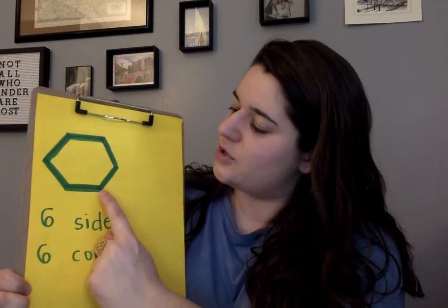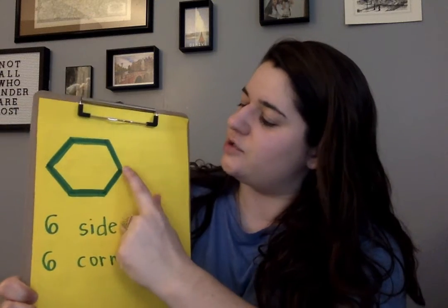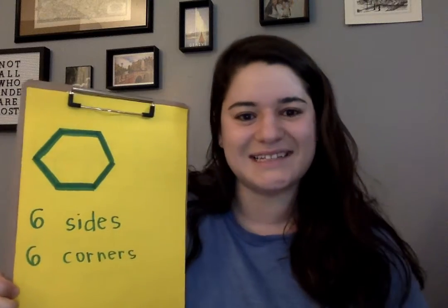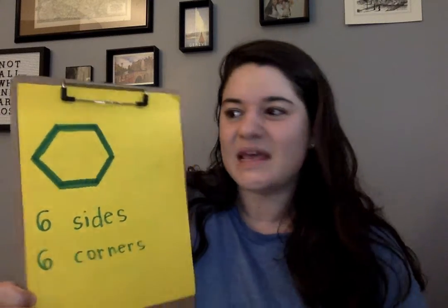Let's count the corners: one, two, three, four, five, six. What can you see around your house that looks like a hexagon? Can you find anything that looks like a hexagon? This shape is a little tricky to find at home.